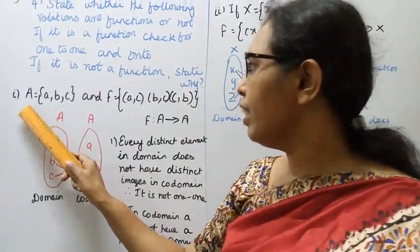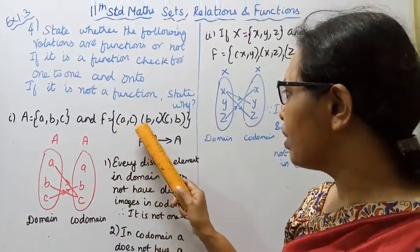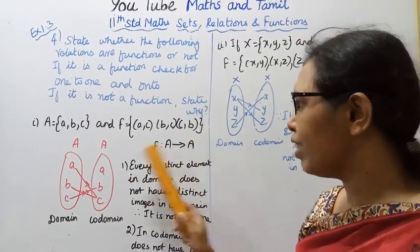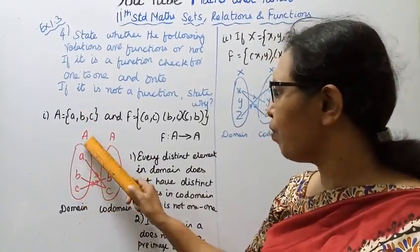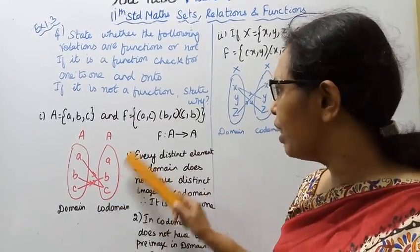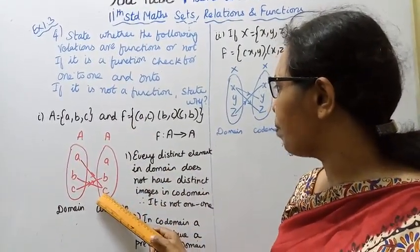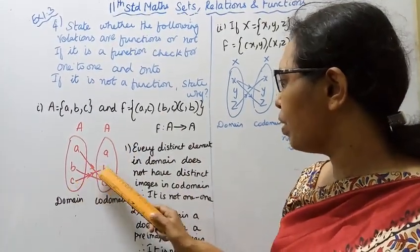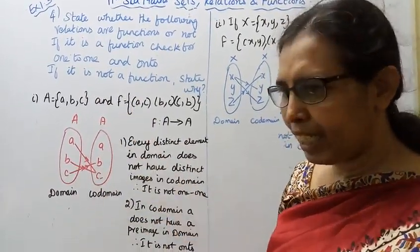First one is A equals {a, b, c} and function is F: a to c, b to c, c to b, and from a to a. Function is a to a. A is {a, b, c}. Function is a to a. This is {a, b, c}. Function is a here.